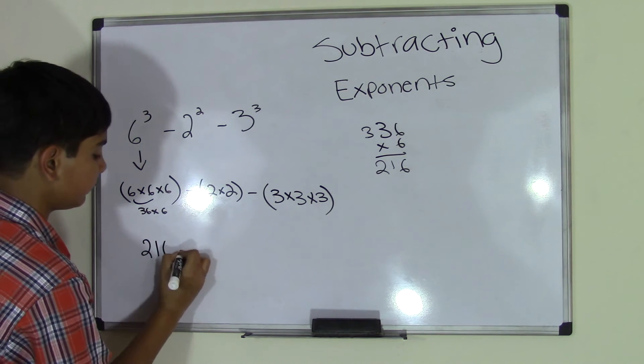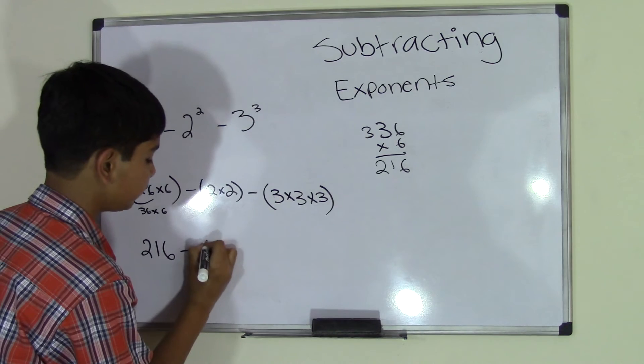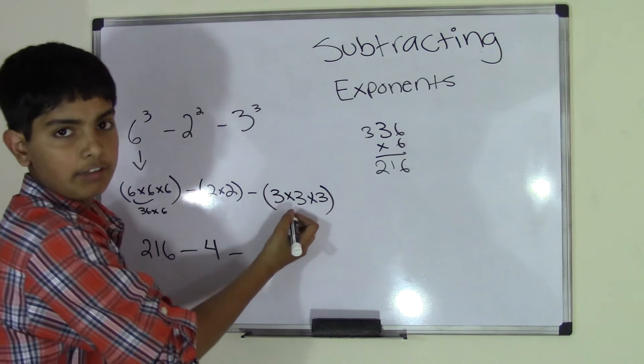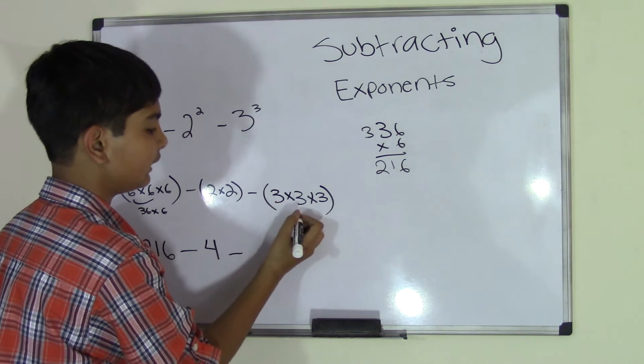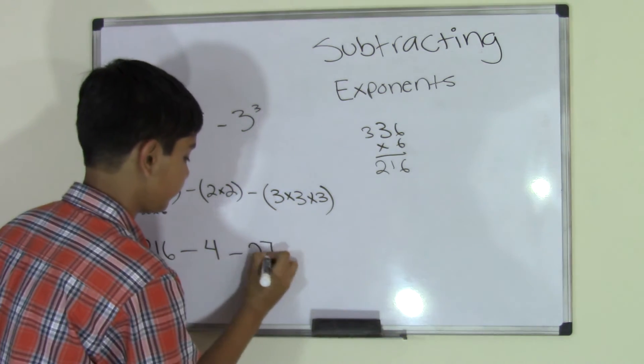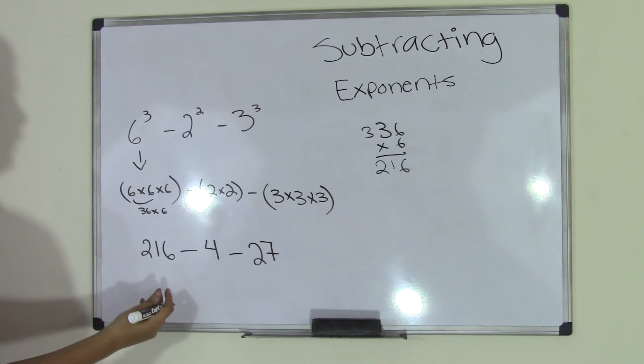Now we do 2 times 2, which is 4. Everybody knows this: 3 times 3 is 9, 9 times 3 is 27.